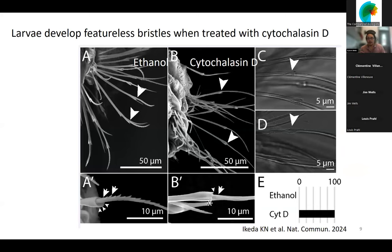As evidence that dynamic microvilli are involved, we treated the animals with an inhibitor of actin polymerization called cytochalasin D. In scanning electron micrographs, ethanol-treated control animals develop normally these bristles with teeth, as I described. However, upon treating with the drug, the animals develop bristles lacking the teeth, and the joint is also malformed. This phenotype can be quantified by looking at differential interference contrast micrographs, and the totality of animals treated with the drug show this phenotype.